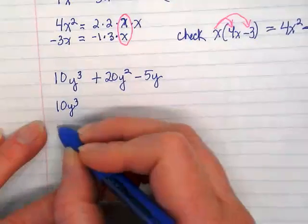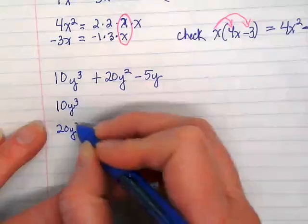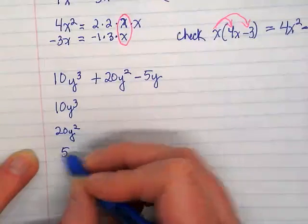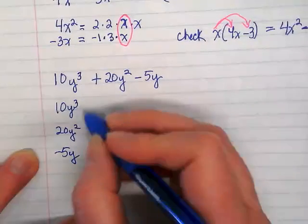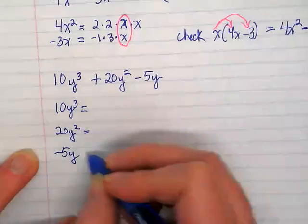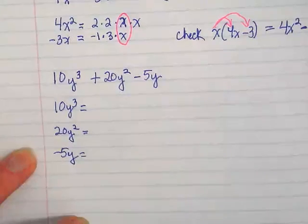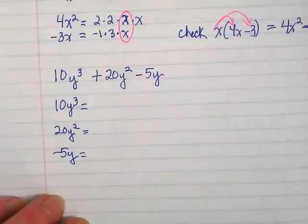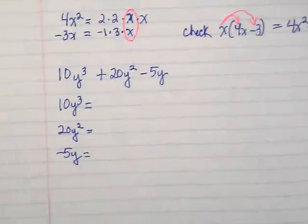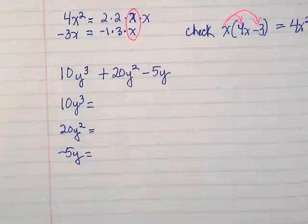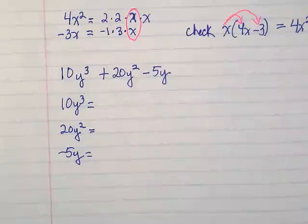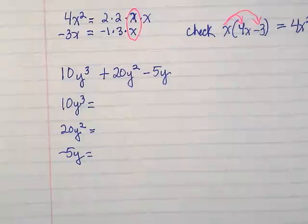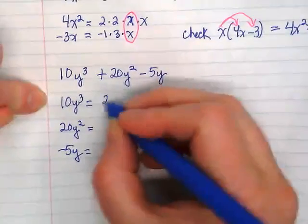10y to the third. 20y to the second. Negative 5y. These are all numbers that are pretty familiar but you can do birthday cake or tree if you want. Prime factors of 10 is going to be two and five. And then how many y's are there? Three.